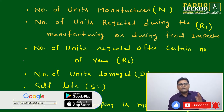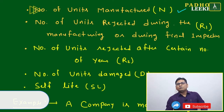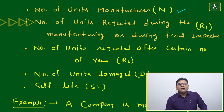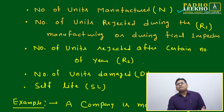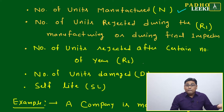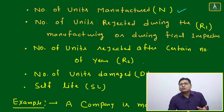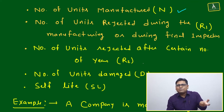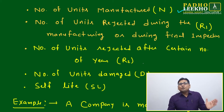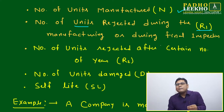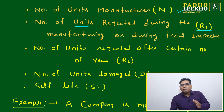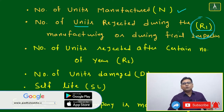Key variables include: number of units manufactured, number of units rejected during manufacturing or during final inspection (R1). Before a product becomes the final product, it passes through each process, and at certain quality checks along the way some percentage gets rejected. This is R1 — number of units rejected during manufacturing or during final inspection — and it can be given as an absolute number or as a percentage.